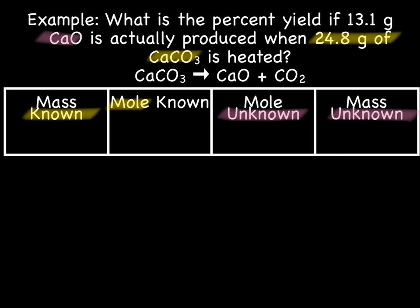We know that we produced one of the products. We produced 13.1 grams of CaO. But what we want to find out is the theoretical yield. So we need to do the calculations on CaCO3. So we're going to start with mass known, which is 24.8 grams CaCO3.